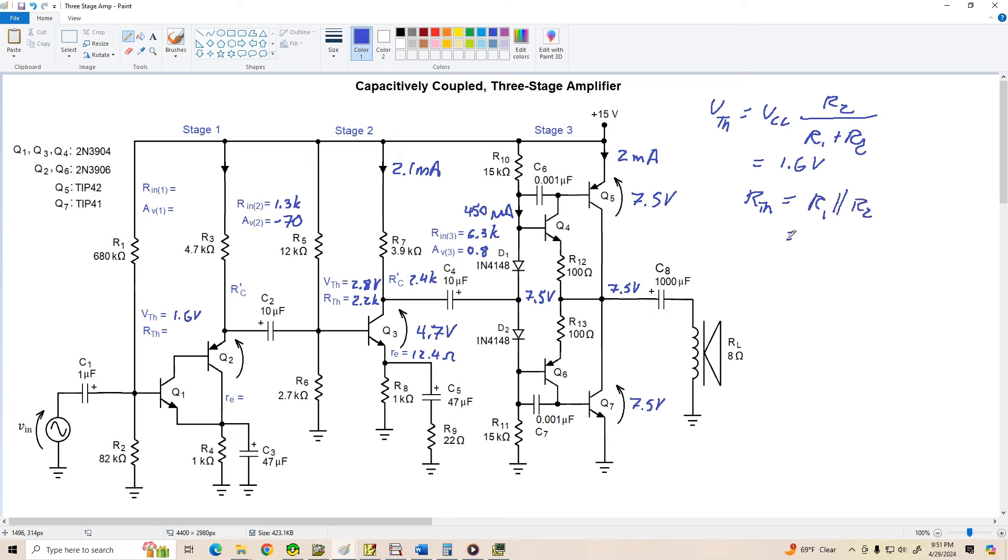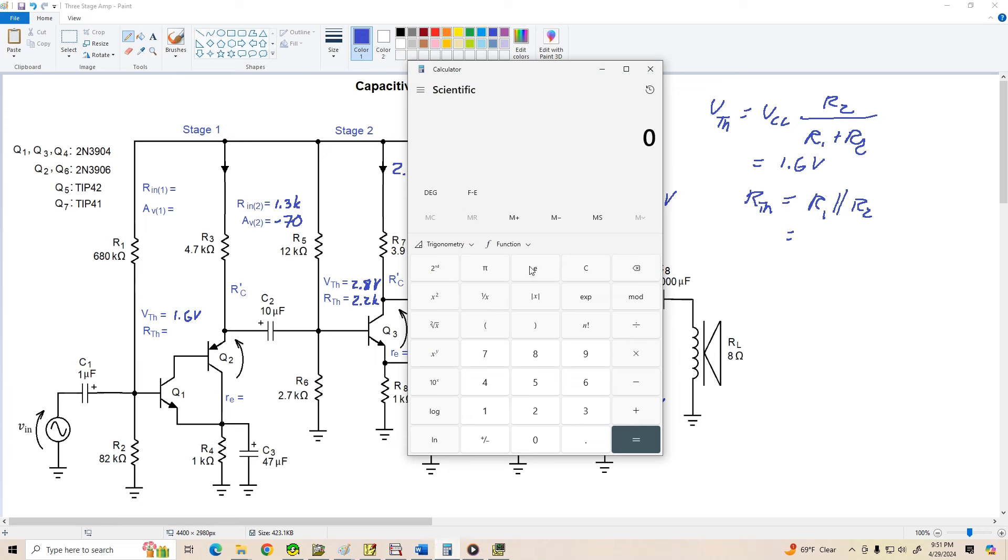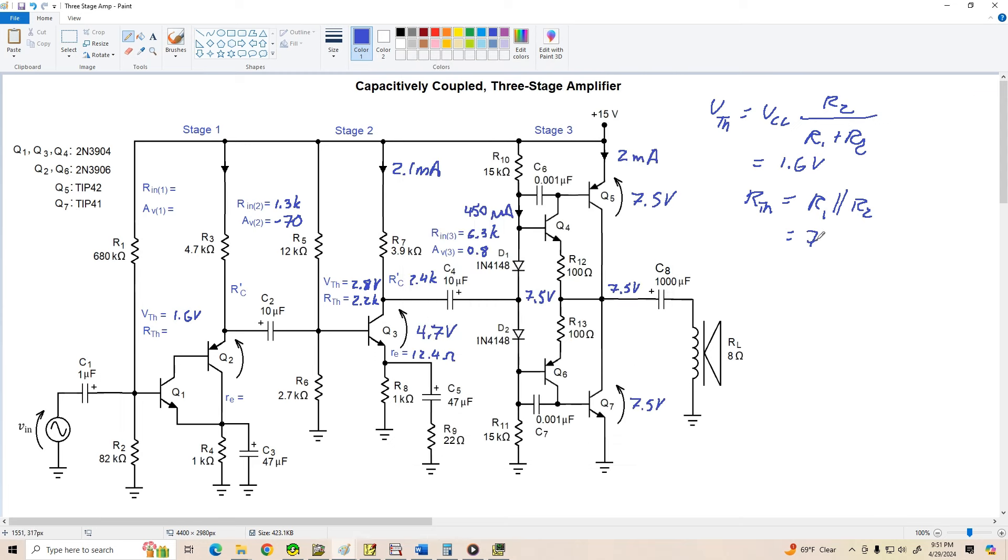Now we need RTH, which is R1 in parallel with R2. We've got 680K plus 82K, which is about 73,000 ohms. So our RTH is 73K ohms.